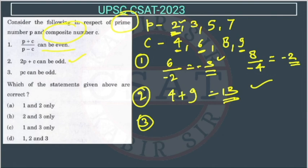Now, third, PC can be odd. Now we have to choose any combination so that we get odd number. So in that way, we have to do. Like, suppose I am taking 9 from here, 3 from here. So I will get 9 into 3, 27. So this 27 is an odd number. So this is also true. So the answer will be option D.